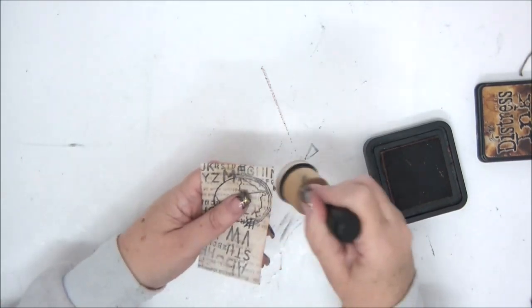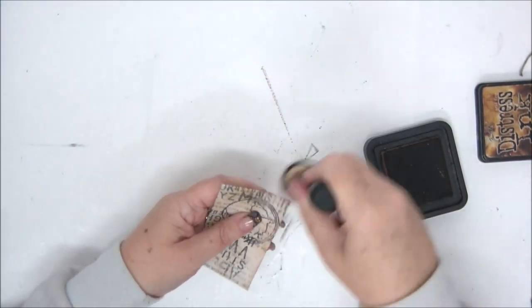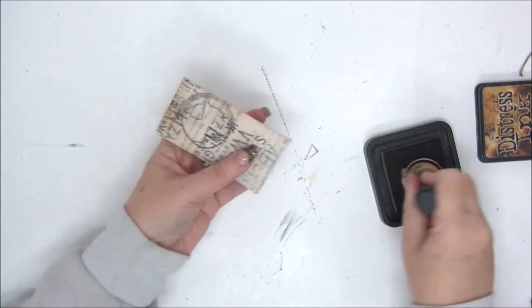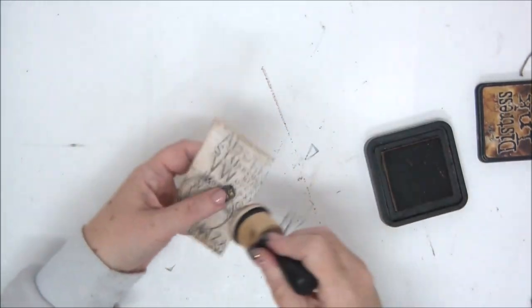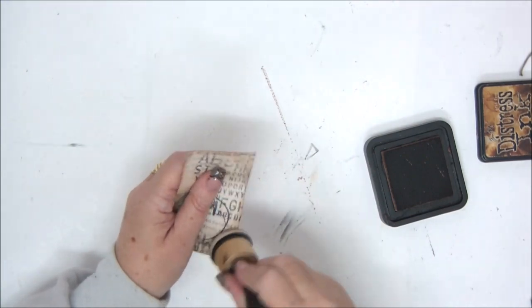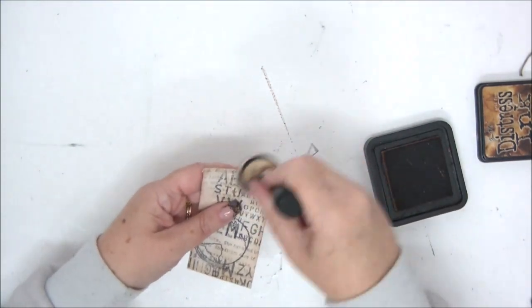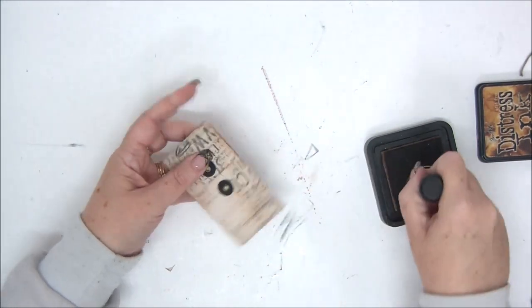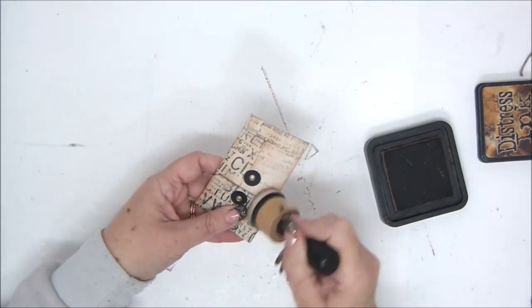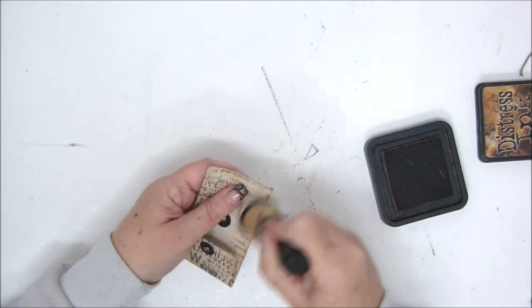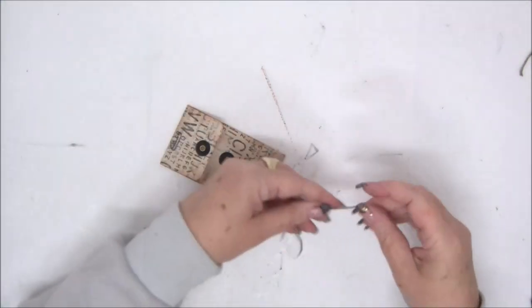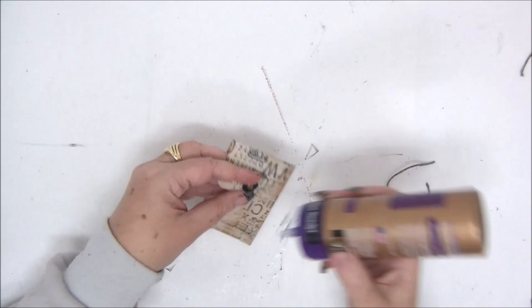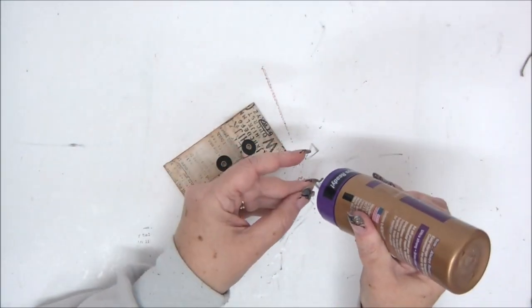So now for the twine. You don't need a long piece of twine, and it's up to you what color you want it to be, of course. Just finishing with the ink. Okay, so I'm adding just a little tiny bit of glue to the edge of the twine.